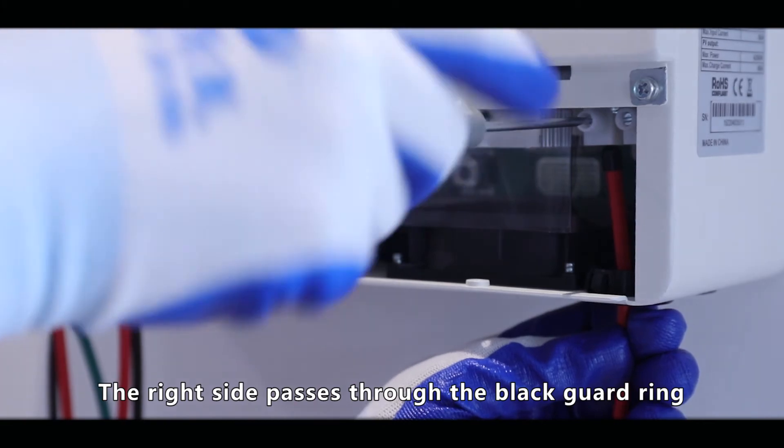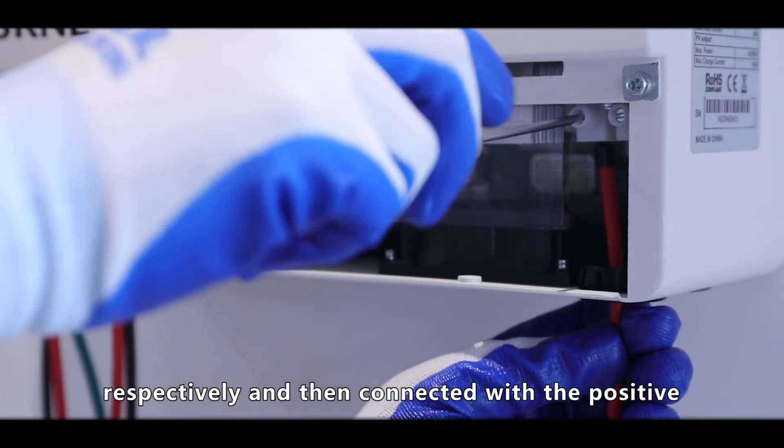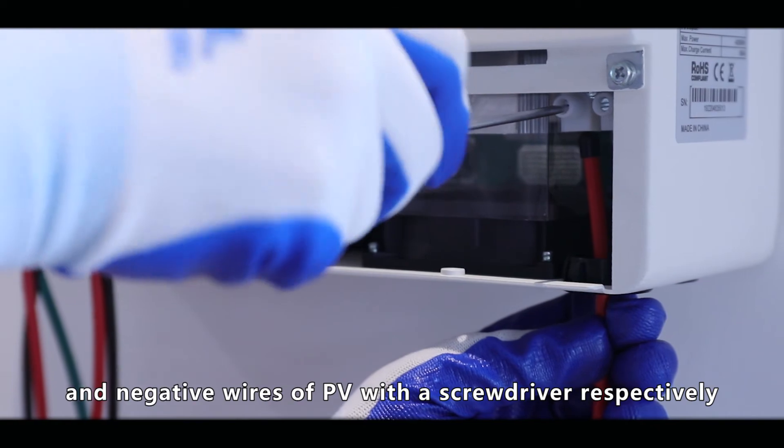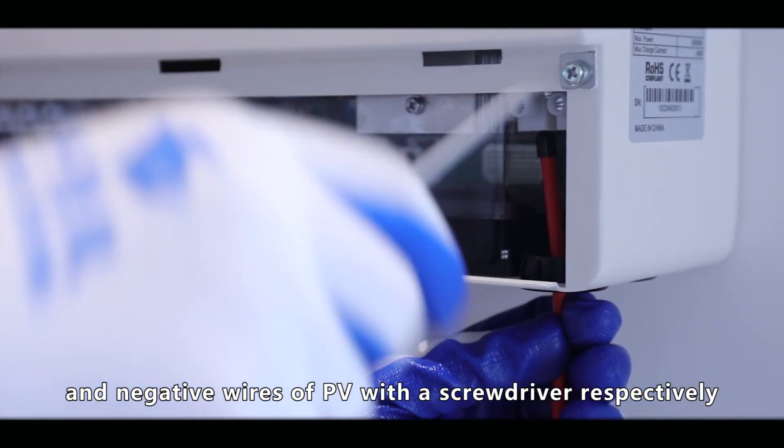The right side passes through the black guard ring and then connect it with the positive and negative wires of PV with the screwdriver.